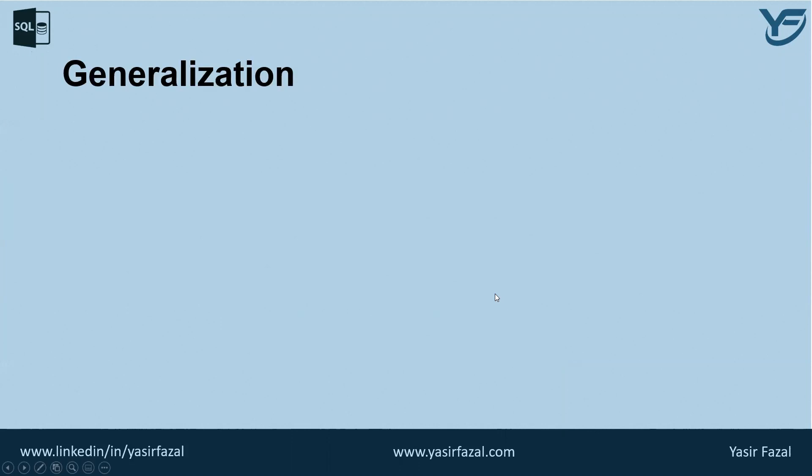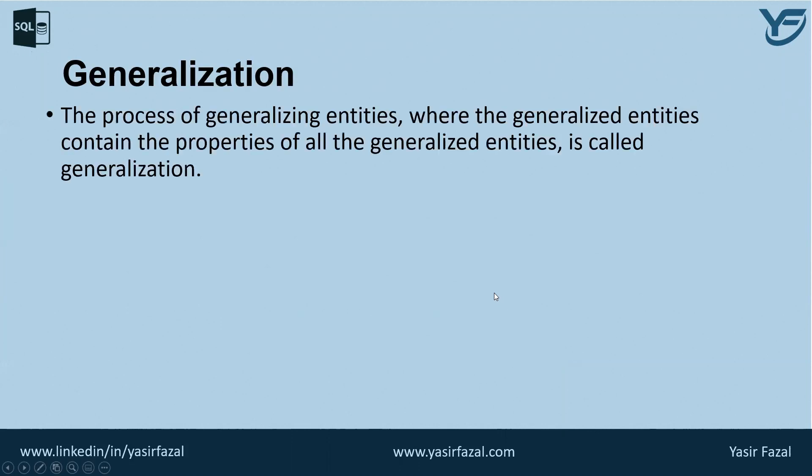When we talk about generalization, just keep one thing in mind: generalization is more like a bottom-up approach in which two or more entities of lower level are combined to form a higher level entity, if they have some attributes in common. In generalization, an entity of a higher level can also be combined with entities of lower level to form higher level entities as well. Generalization is more like a subclass and superclass system, but the only difference is the approach — generalization uses the bottom-up approach. In generalization, entities are combined to form more generalized entities; subclasses are actually combined to make a superclass.